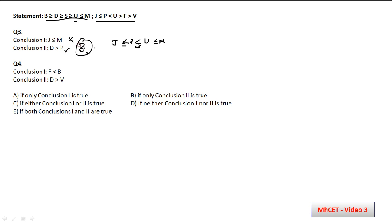Question 4: conclusion 1 says F < B. From statement 1: B ≥ D ≥ S ≥ U, and from statement 2: U > F. So B ≥ U > F, meaning F is definitely less than B — conclusion 1 is true. Conclusion 2 says D > V. From the chain: D ≥ S ≥ U > F > V, so D > V is also true.